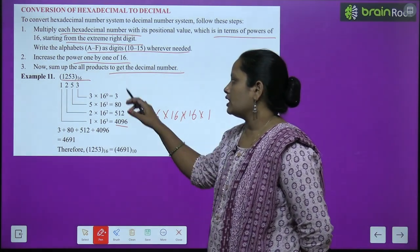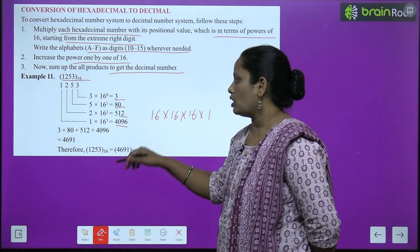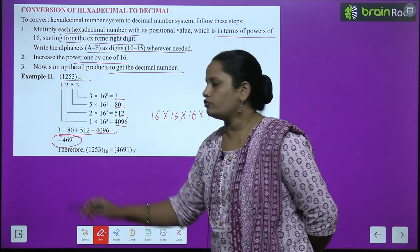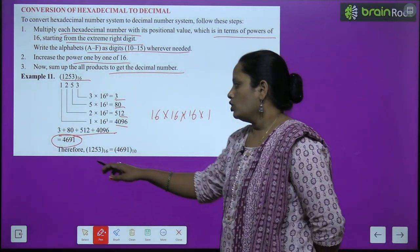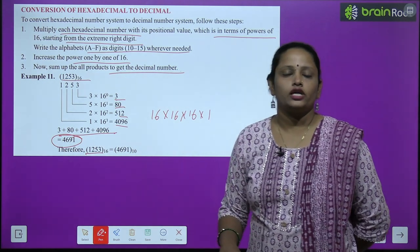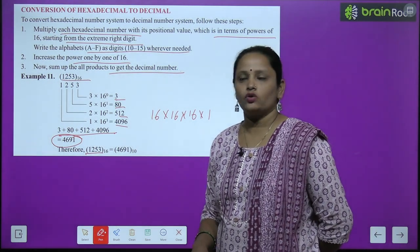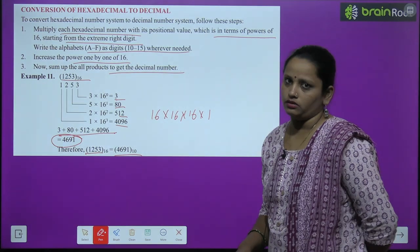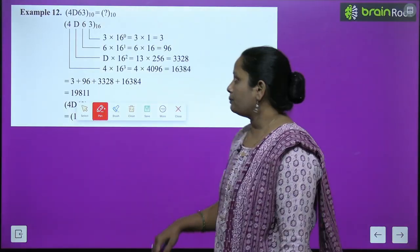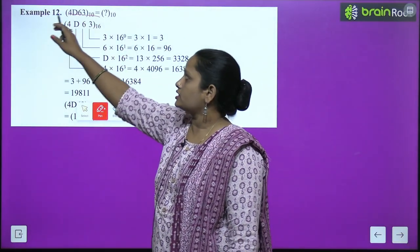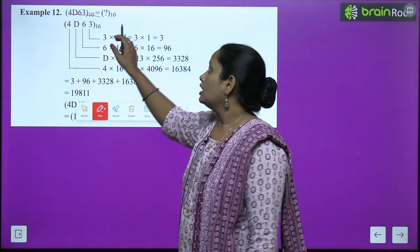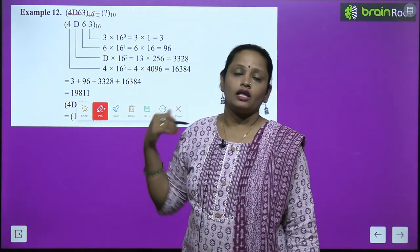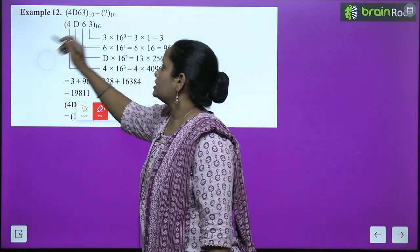Adding all the numbers gives 4691. So 1253 hexadecimal was converted to 4691 in decimal. Another example is given here: 4D63 base 16 — convert this to decimal.